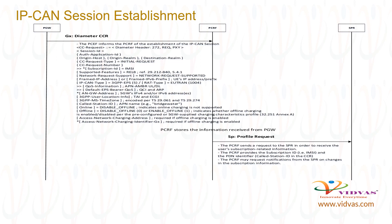PGW sends a Diameter CCR message to PCRF over the GX interface. PGW includes important parameters such as MSISDN, IP-CAN type, QoS information, and default EPS QoS in the Diameter CCR message.